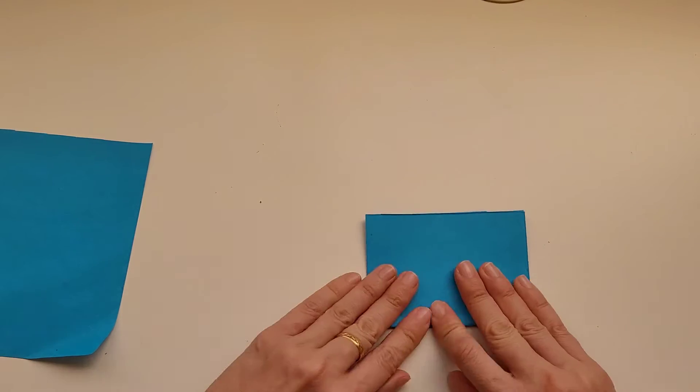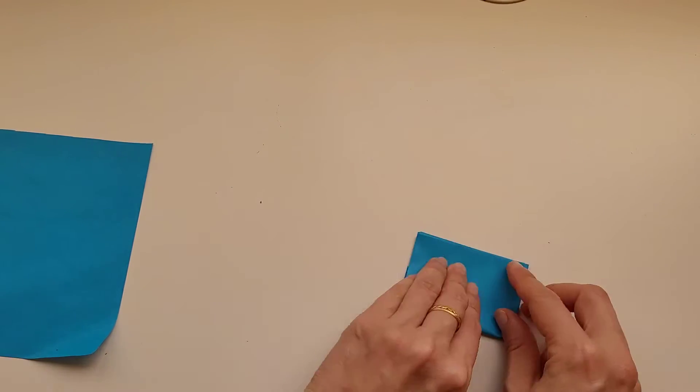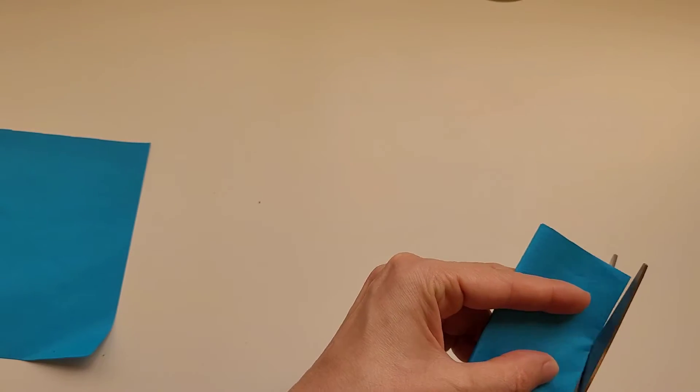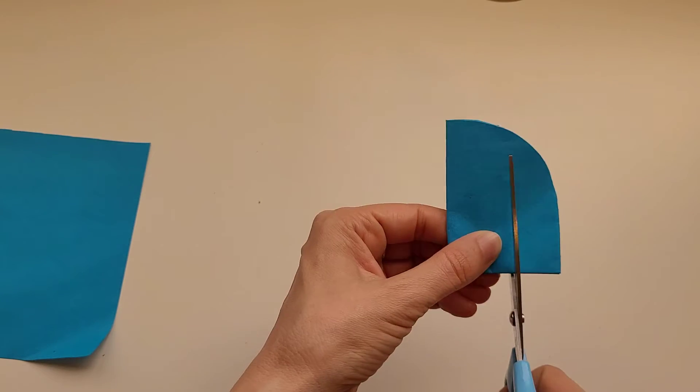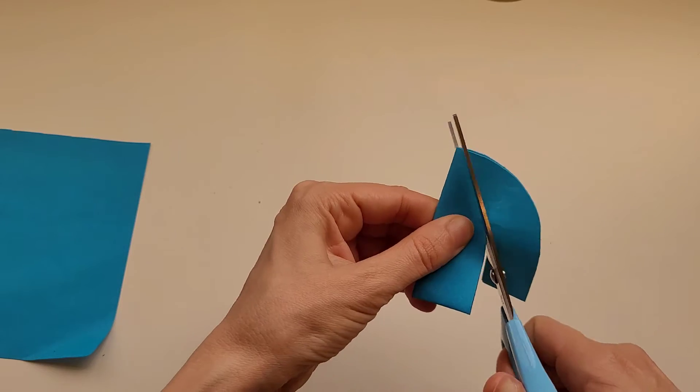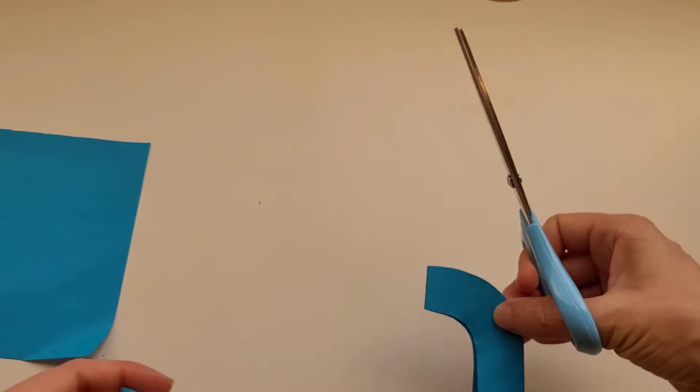To make this activity, we are going to use some colored paper. I'm going to cut out two of everything because I'm going to make this craft with a little friend. I'm going to make the body out of blue, but you can use whatever color you want to.